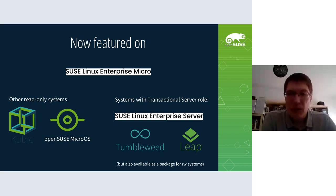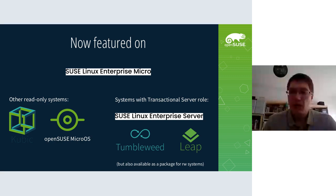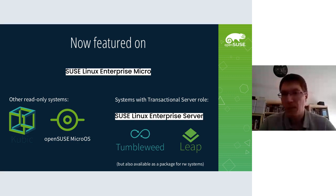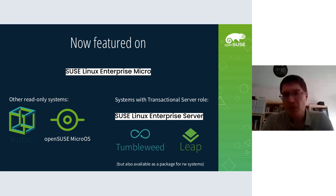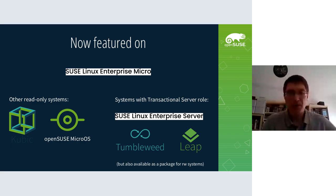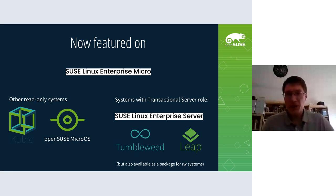That's just one of the systems we have in our portfolio which share some mechanism. The other systems we have are on the OpenSUSE side: OpenSUSE Kubic and OpenSUSE MicroOS. But also our regular systems like SUSE Linux Enterprise Server, Tumbleweed, or Leap also provide a transactional server role or transactional server module, which puts those systems into read-only mode. Transactional update itself is basically just a package you can install in any of those releases, so you can install it on basically any system.